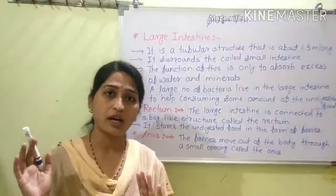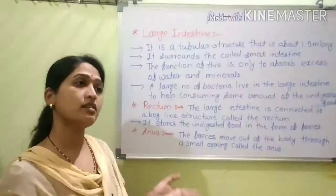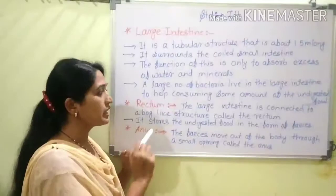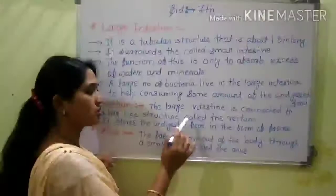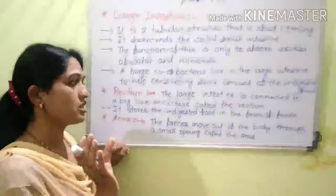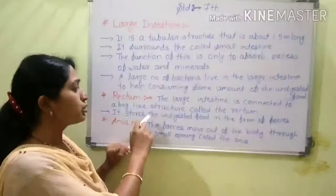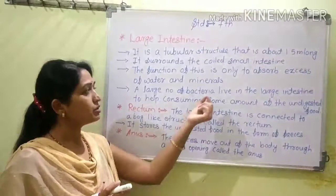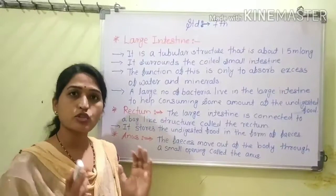The large intestine is connected to a bag-like structure called the rectum. The rectum stores the undigested food in the form of feces.